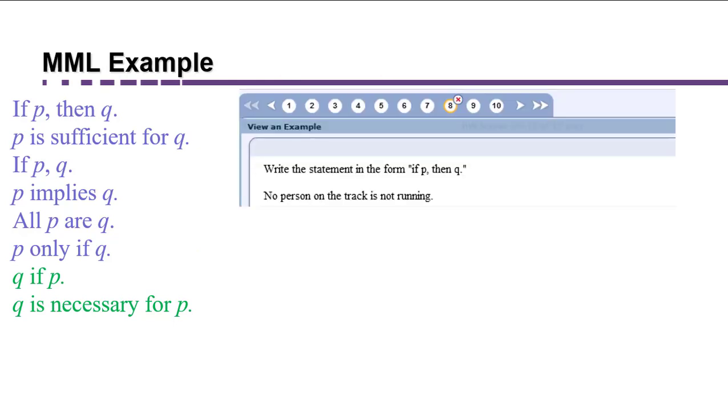Here's another example from our homework in My Math Lab. It says write the statement in the form if P then Q. And it says no person on the track is not running. Now no isn't in any of our statements on the left here, so that could be a little bit confusing.